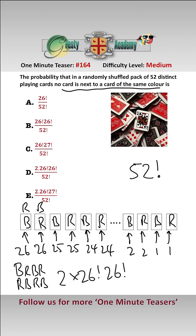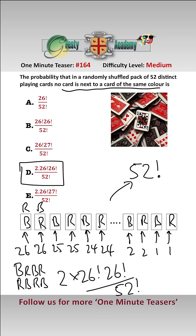For red-black, it's exactly the same, so we multiply by two, and of course divide by the total number of possibilities which is 52 factorial. That gives us answer D: 2 times 26 factorial squared over 52 factorial. In teaser 165 we're going to answer a very similar question, but which gives a slightly different answer.